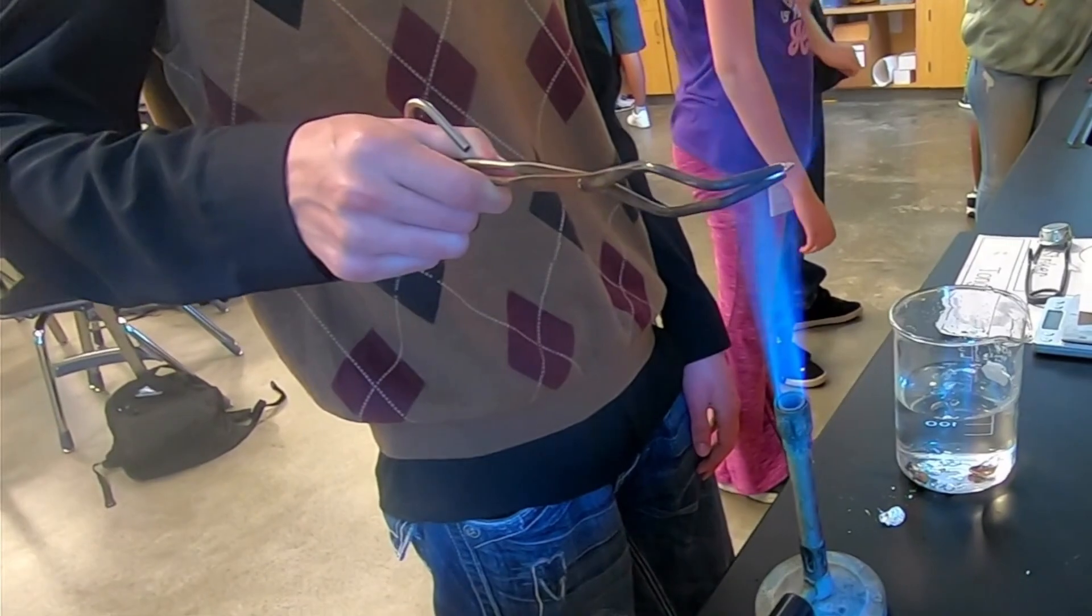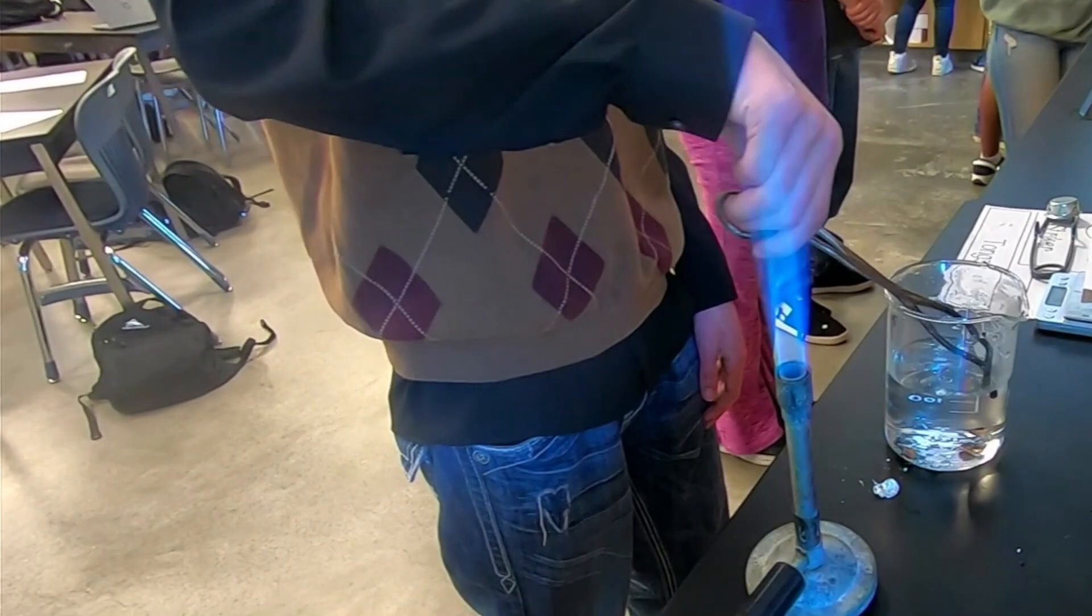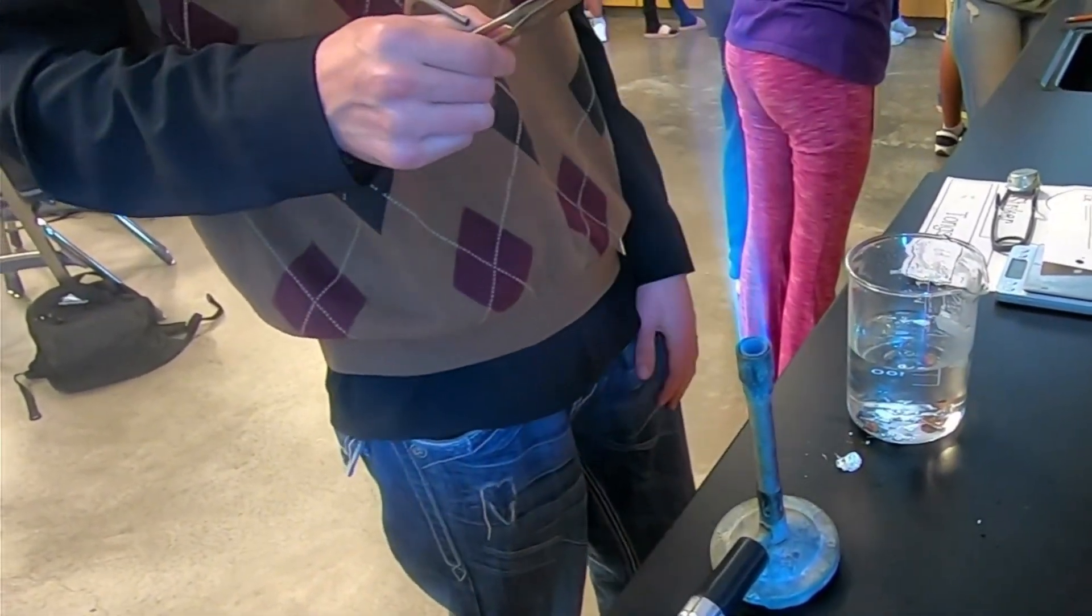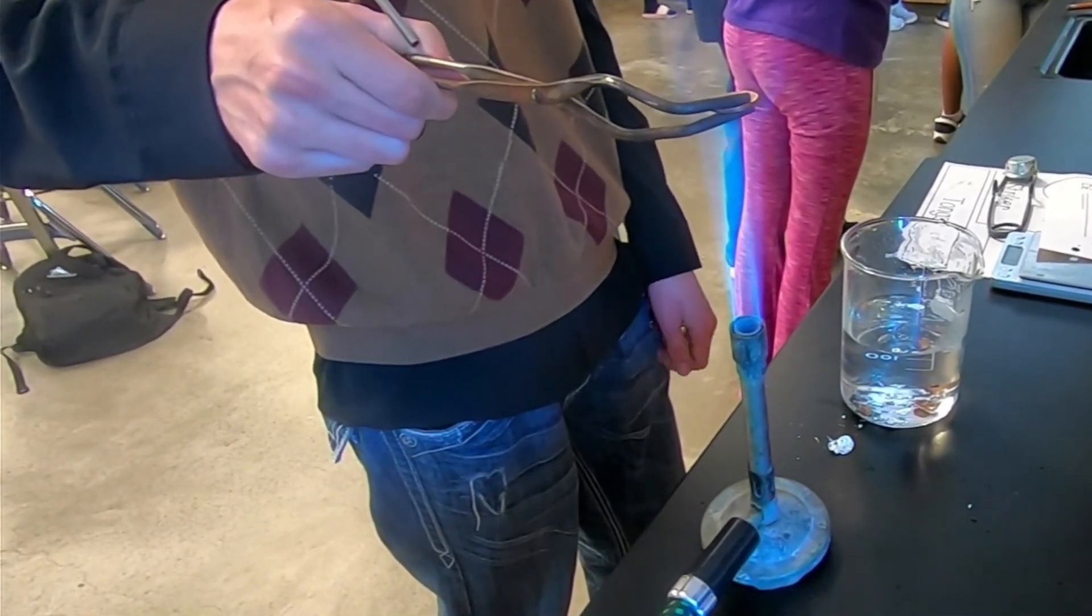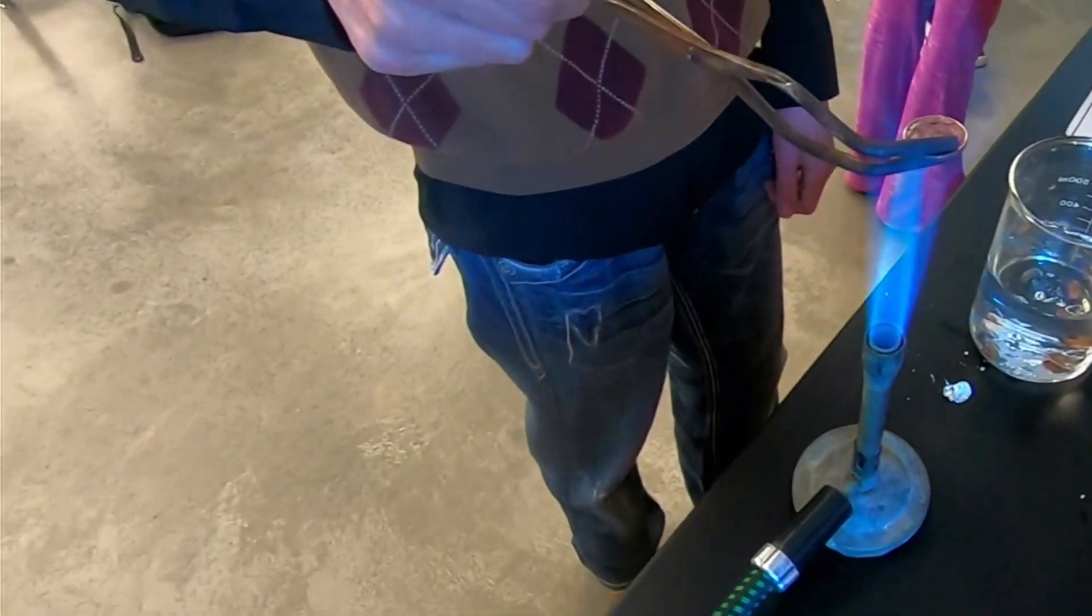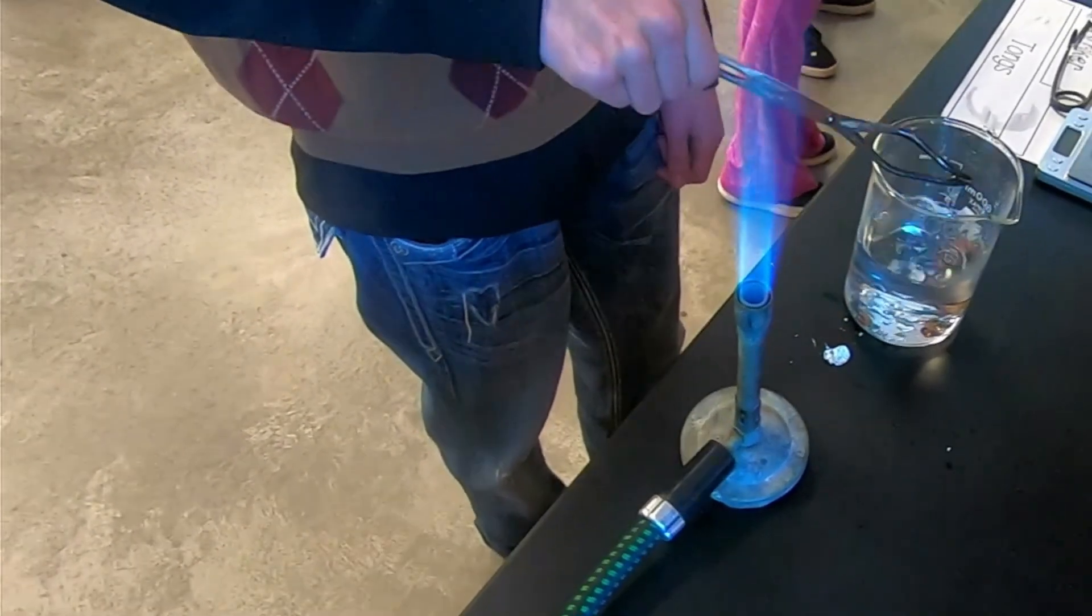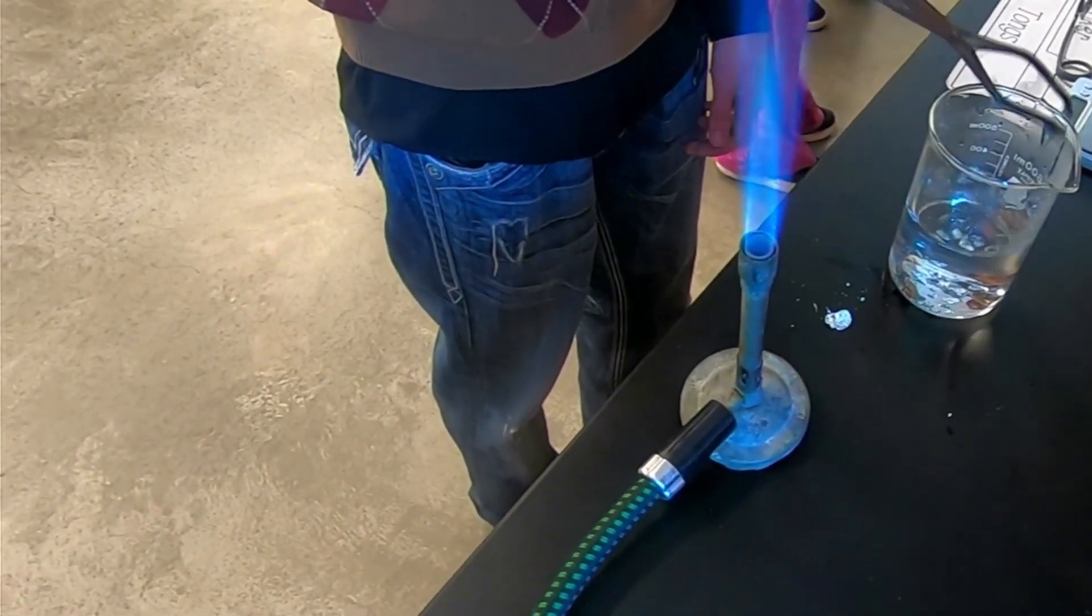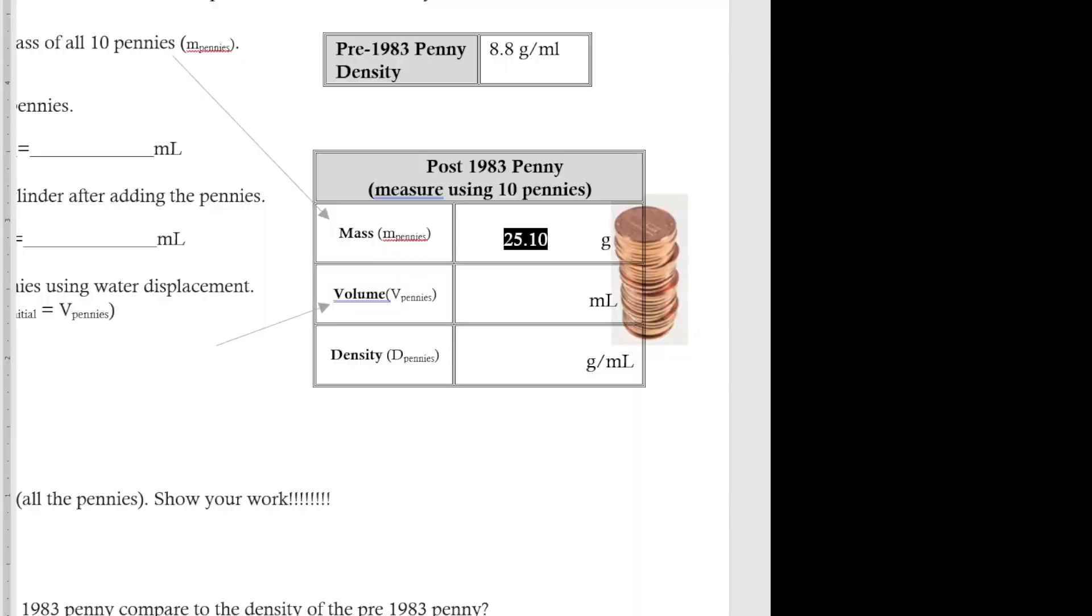Eventually what we do is we'll dump out that water and collect all the metal pieces, separating out the copper shells from the silver metal that was on the inside. So that silver metal is the unknown metal that I refer to on the back page. On the back page of the lab we're working with only the silver metal pieces that came out of the pennies.